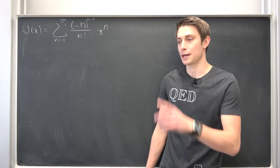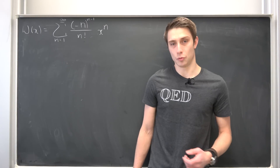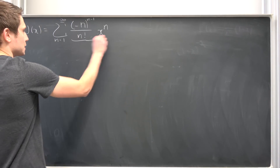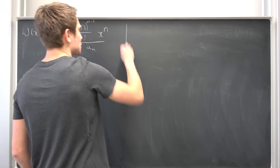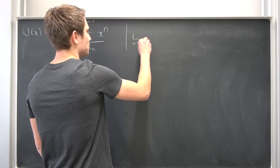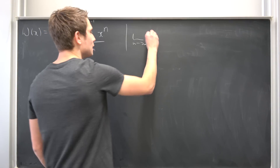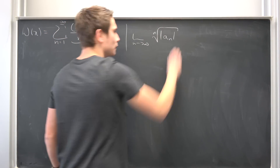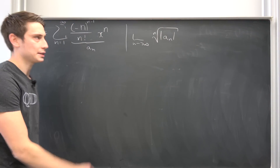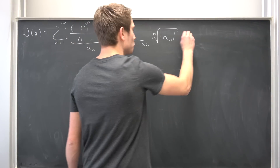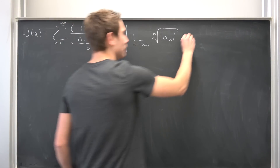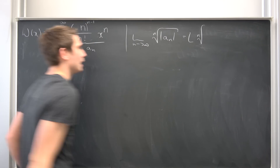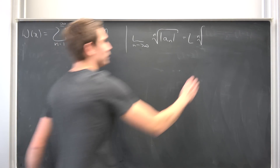What's the cool way? We are going to take a look at the root test. If those are our sequences a_n, we are going to take the limit as n approaches infinity of the nth root of the absolute value of this sequence and see what we get. I'm going to refer to this limit as capital L to make things easier.